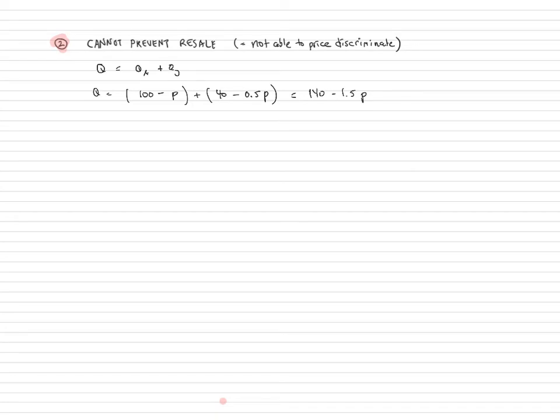All right. I'm going to turn that into an inverse world demand function. So that's going to be 140 divided by 1.5 P minus 1 divided by 1.5 Q, which is equal to 93.33 minus 0.67 Q. All right. Now I'm going to find a revenue function for the world. So that's 93.33 minus 0.67 Q times Q, 93.33 Q minus 0.67 Q squared.